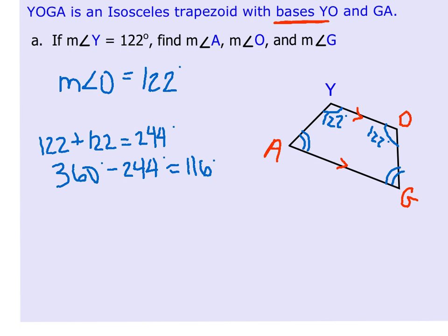Now we know that angles A and G are congruent, and so I can take the 116 degrees and divide by 2, and we get 58 degrees. That means the measure of angle A is equal to the measure of angle G, and they are both equal to 58 degrees.